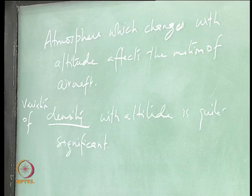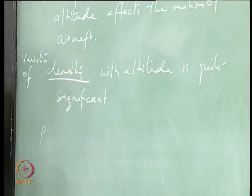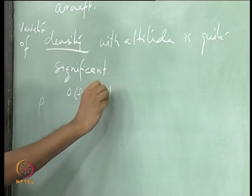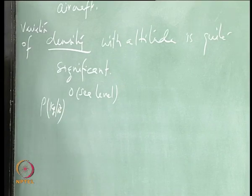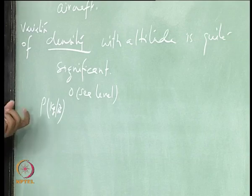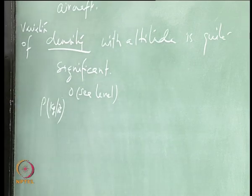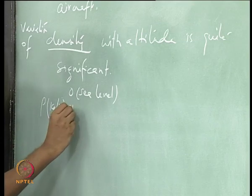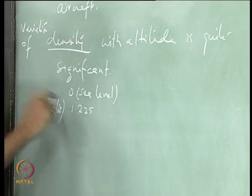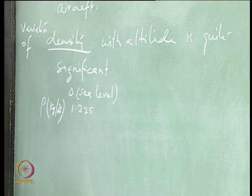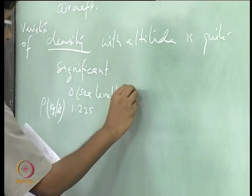If you look at the order of magnitude of density at different altitude levels — at sea level the density is 1.225 kg/m³. Let us look at how it changes over different altitudes.